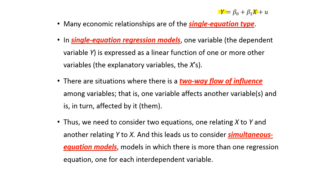Thus, we need to consider two equations instead of one — one relating x to y, and another one relating y to x. This is called simultaneous equation models, where we have more than one regression equation instead of one, and more than one dependent variable represented in a set of explanatory variables.